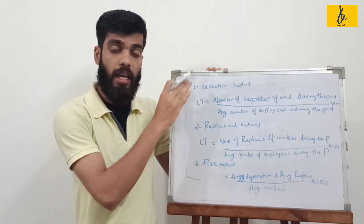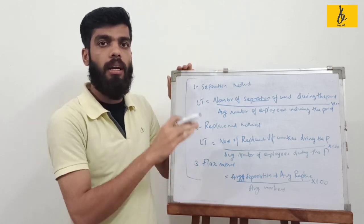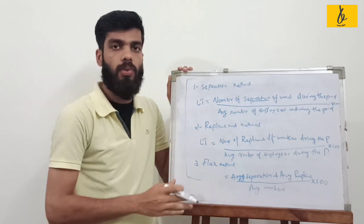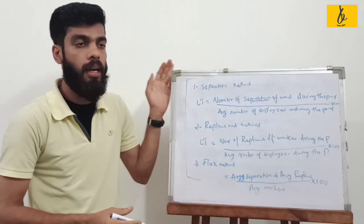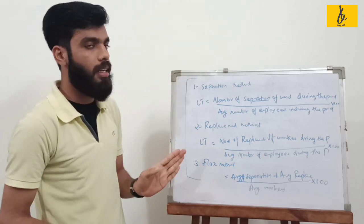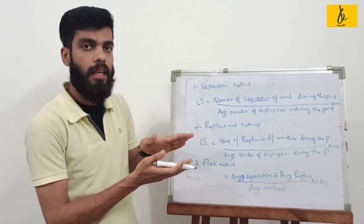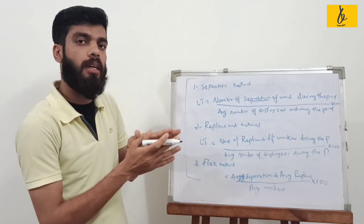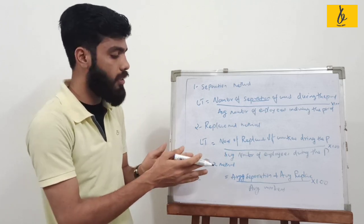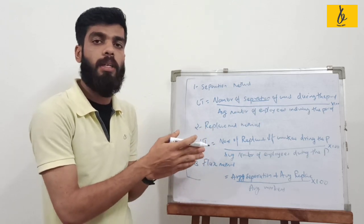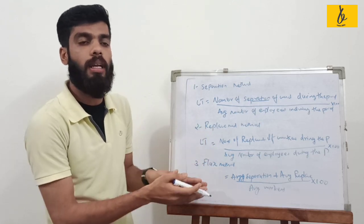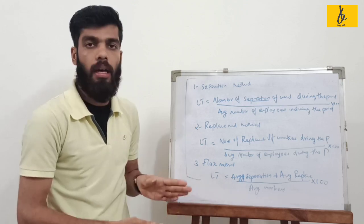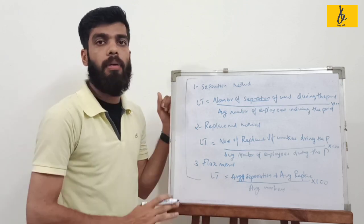For example, number of employees: fifteen thousand — more than the number of employees in the same year.